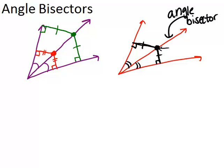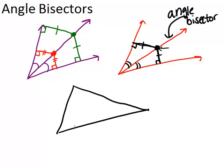Something interesting happens when you take a triangle and find the angle bisector for each of the three angles in the triangle. Let's go into Geometer's Sketchpad to investigate this.